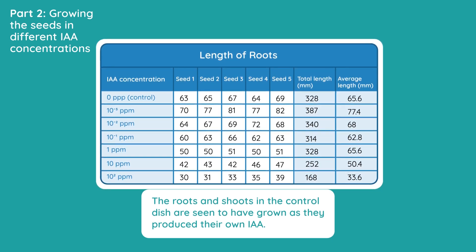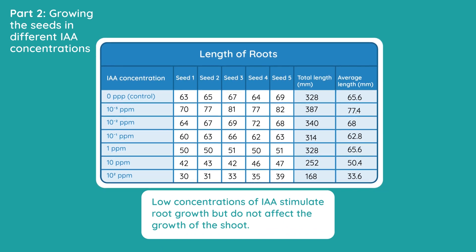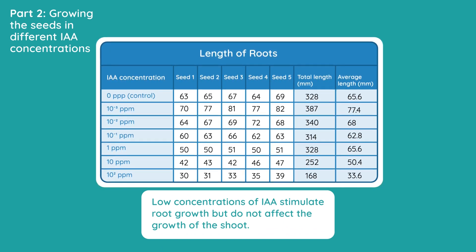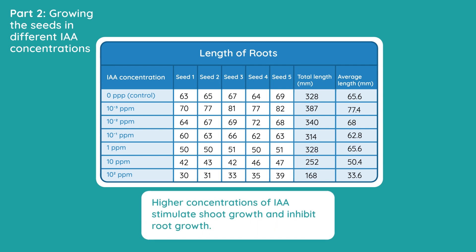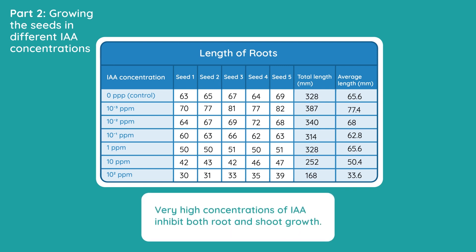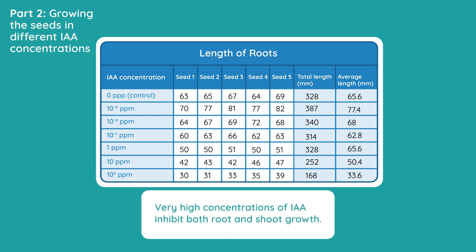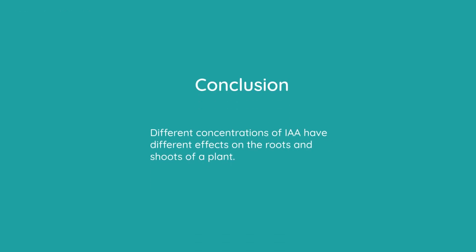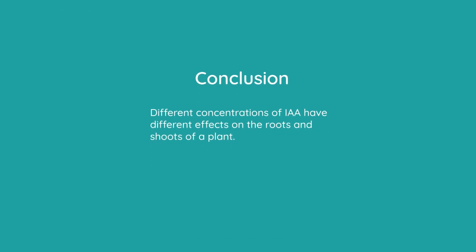Low concentrations of IAA stimulate root growth, but they do not affect the growth of the shoot. Higher concentrations of IAA stimulate shoot growth and inhibit or stop root growth. And very high concentrations of IAA inhibit or stop the growth of both roots and shoots. Therefore, we can conclude that different concentrations of IAA have different effects on the roots and shoots of a plant. Therefore, we can say that IAA is concentration dependent.